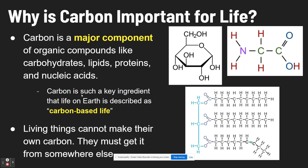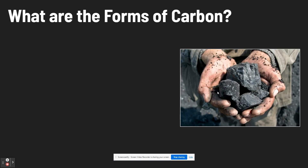Living things can't make their own carbon — they have to get that carbon from somewhere else. You depend on carbon, but you can't make your own carbon out of nothing. This leads into how carbon cycles through the four global spheres: the atmosphere, geosphere, hydrosphere, and biosphere.